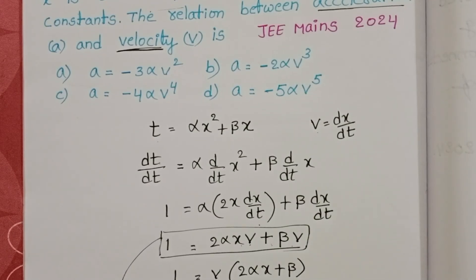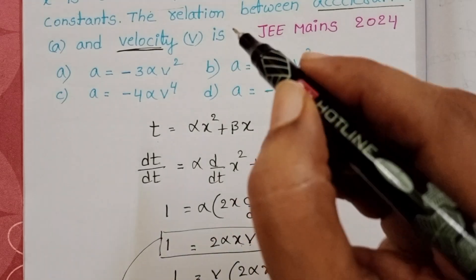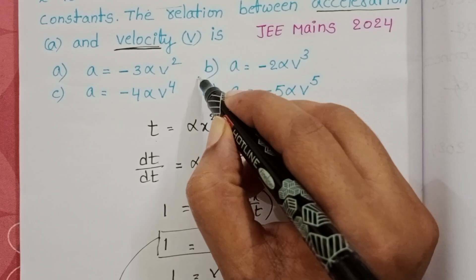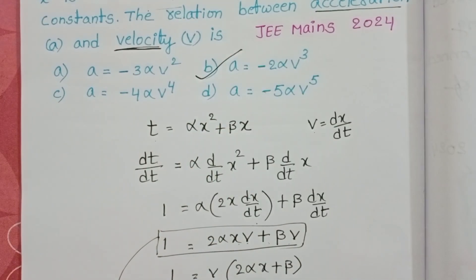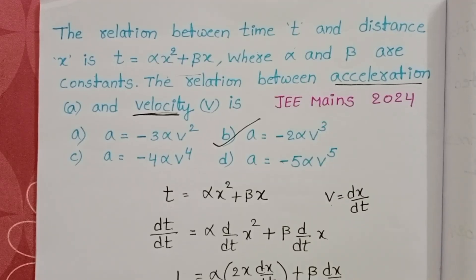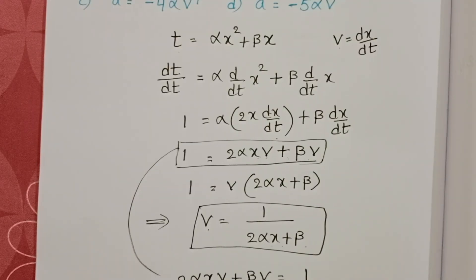Finally, acceleration a = -2αv³. This is the relation between acceleration and velocity. Checking the given options, the second option is correct.